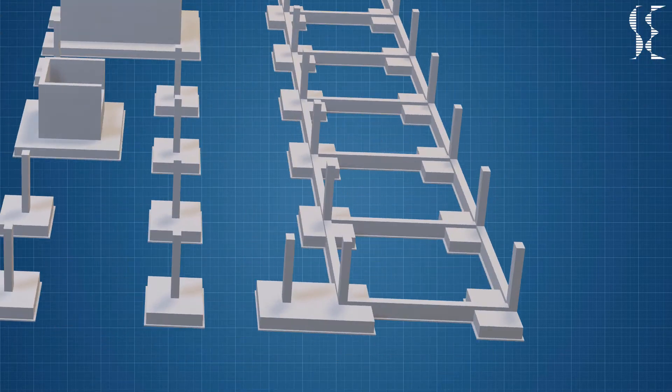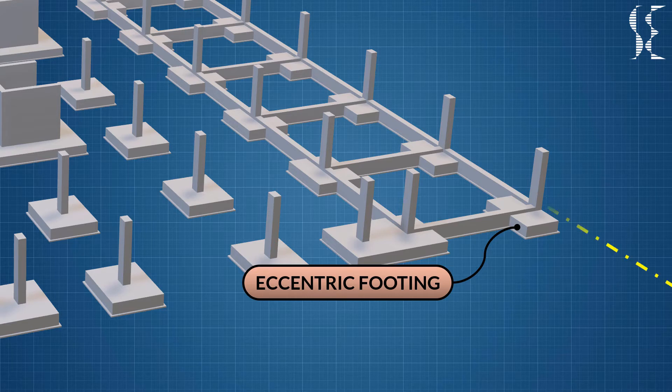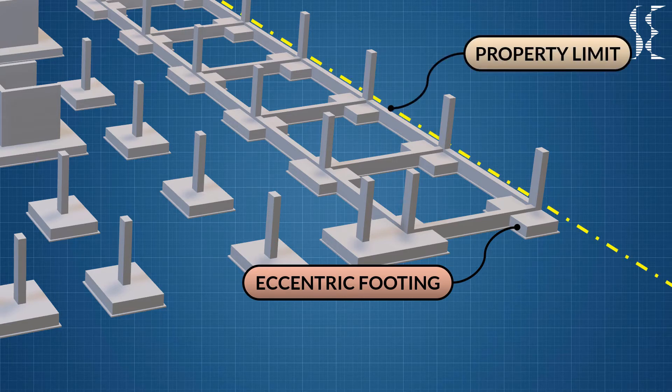Next in shallow footings, we have eccentric footings which is a type of isolated footings in which column is at the edge of the footings. It is constructed when the exterior column is close to the boundary or property line and hence there is no scope to extend footings beyond the column face. In this case, the eccentric footings is connected by a strap beam to the isolated footings.